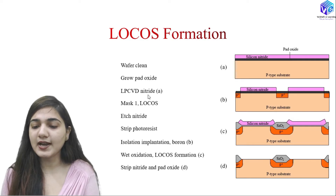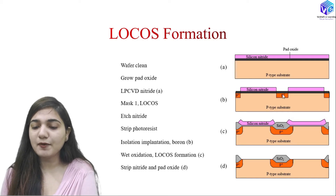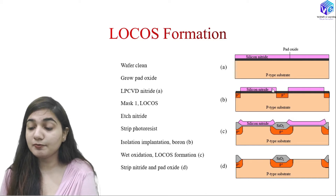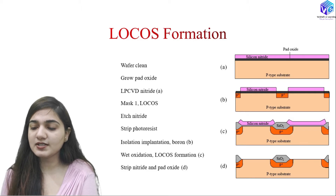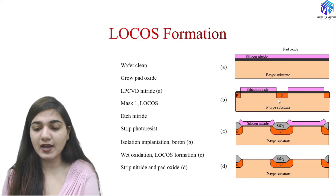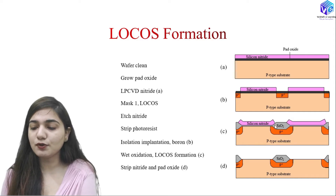We start with wafer cleaning, then grow the pad oxide, then grow the nitride with the help of low-pressure chemical vapor deposition (LP-CVD). After that we form mask one with the help of the photolithography process. With the help of the first mask, we etch the nitride from the particular position. After that we strip the photoresist layer and form the isolation implantation — an isolation layer of boron made with the help of ion implantation. This is called the isolation implantation.